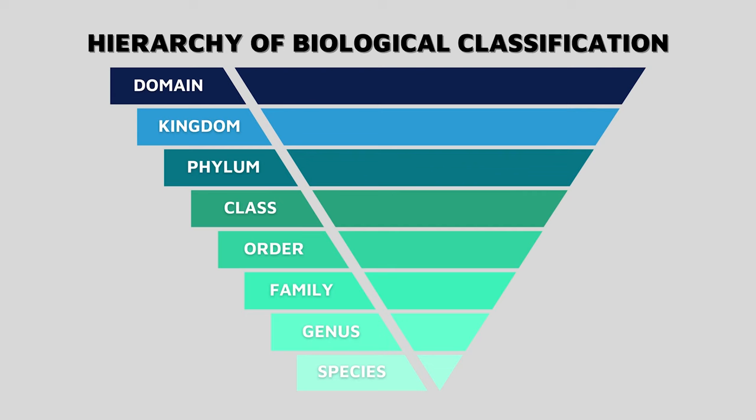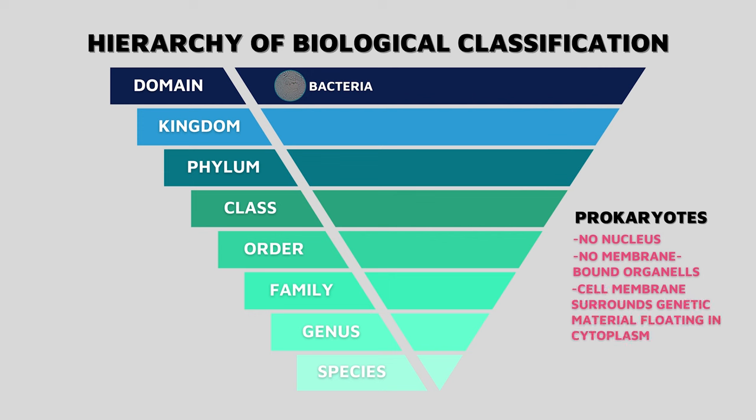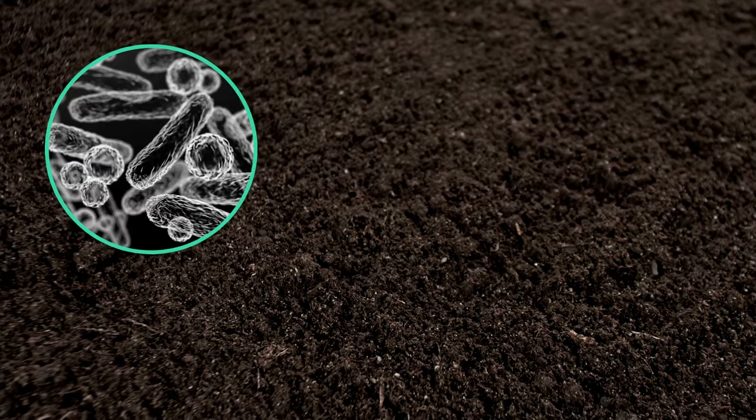Let's start at the top. The most inclusive groups are domains. There are three domains: Bacteria, Archaea, and Eukarya. The domain Bacteria is full of bacteria. They are prokaryotes and therefore have characteristics like no nucleus and no membrane-bound organelles — organisms with non-complex cell structures. This domain can include bacteria fixing nitrogen in the soil or helping with decomposition, bacteria that make you sick, or bacteria hanging out in your intestines helping you digest that milkshake from lunch.